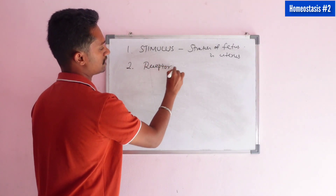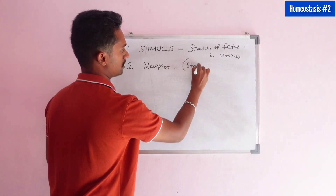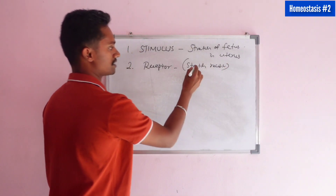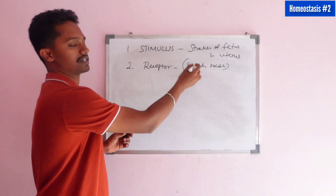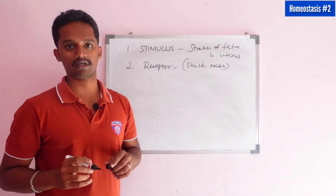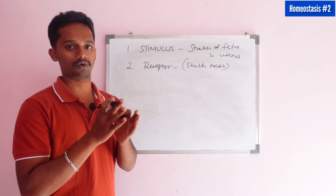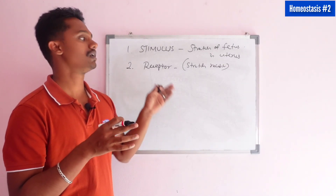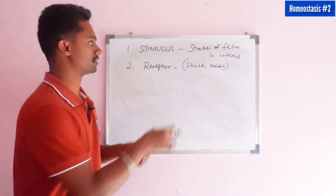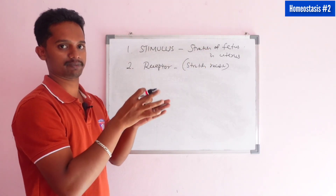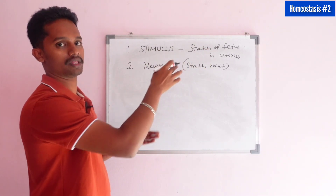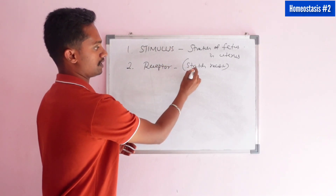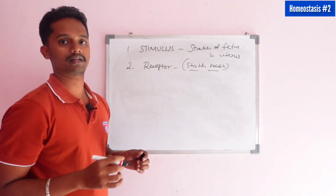The receptor that detects this is called the stretch receptor. Just as there is a thermoreceptor for temperature, there is a stretch receptor in the uterus, specifically in the cervix region. When the cervix region is stretched, the stretch receptors detect this stretching in the uterus.